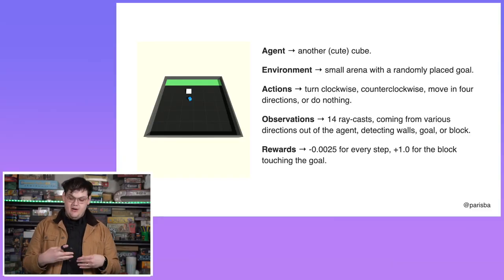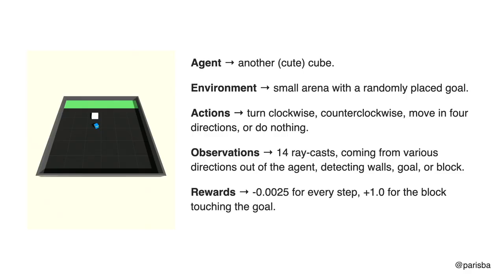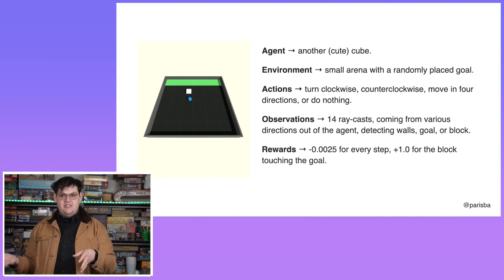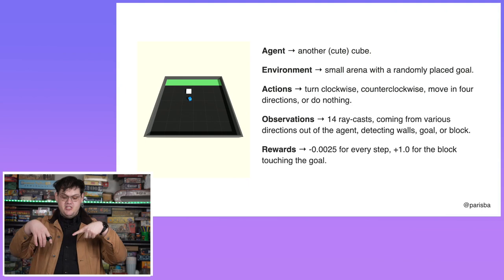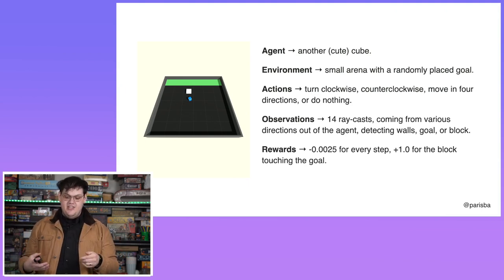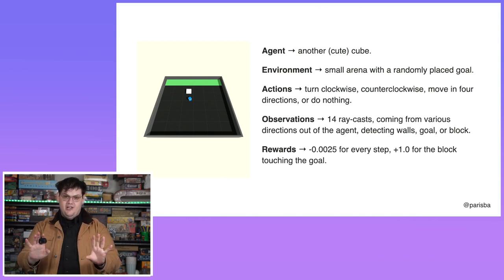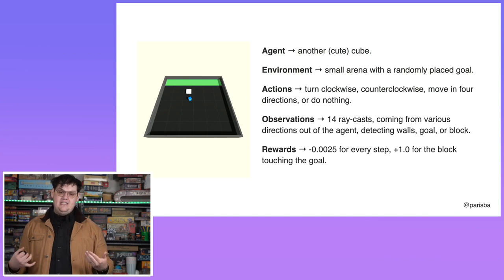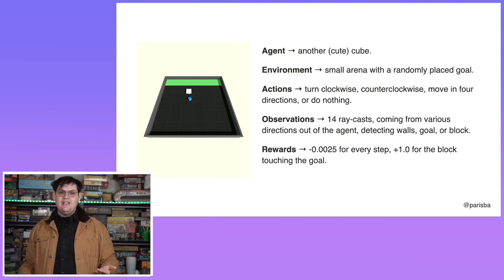Here's another example — another cute cube in a small arena with a randomly placed goal area and a randomly placed cube. The agent can turn clockwise or counterclockwise, move forward, backwards, left or right, and can also do nothing. Its observations are 14 raycasts from various points on its body that detect the walls of the arena, the goal area (the green strip), and the block randomly positioned in the environment. The thing we want the agent to learn is to push that block into the goal. It gets a very small negative reward for every step of the simulation — to penalize it for existing and make it act quickly — and a massive reward for the block being pushed into the goal. Eventually, this agent learns to push the block into the goal.